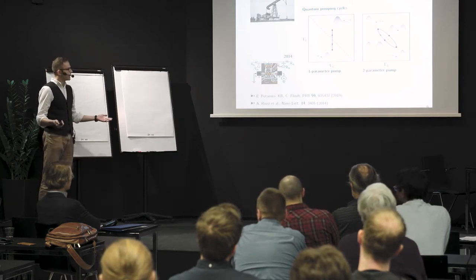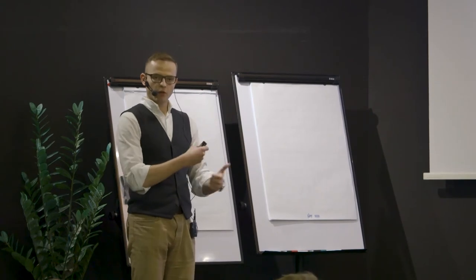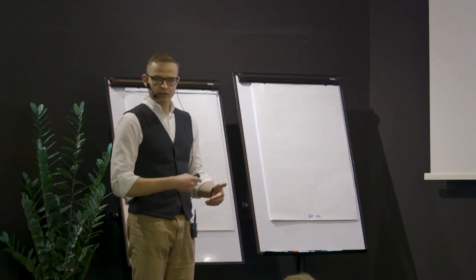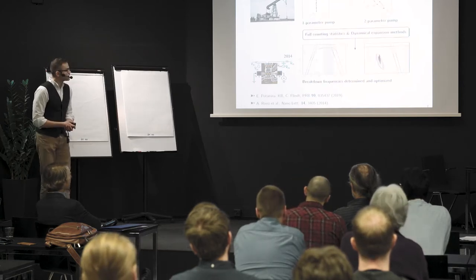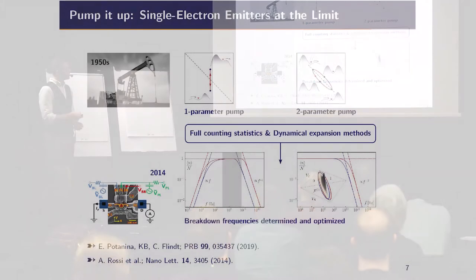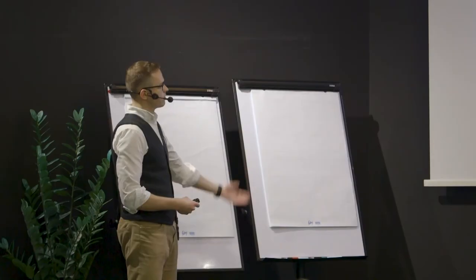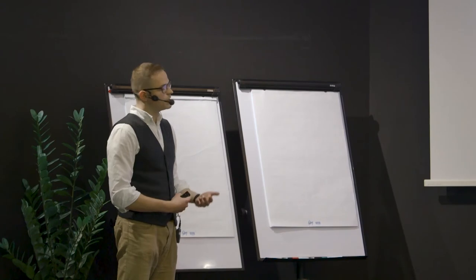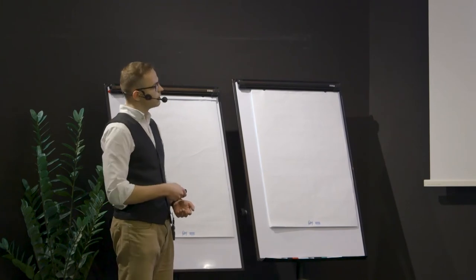The question arising again is how can you control this device such that you produce a perfectly quantized current, exactly one particle per cycle. And you also want to run as many cycles as possible per second. You want a quantized current which is as large as possible. This project was basically carried out by Elina, who is also here and will present a poster tomorrow. What we did is, again, we set up a dynamical model for the system. We applied methods from full counting statistics. These models are usually quite involved, but still we were able to explore limiting behavior of the system quite accurately using dynamical expansion methods.